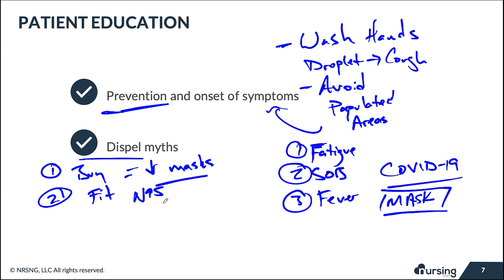Another reason to discourage patients from buying N95 masks is that they require fit testing to be effective. Someone with a beard, for example, will not get a proper seal. Additionally, people tend to reuse masks, which creates two problems: they constantly adjust the mask touching their face, and they may be reintroducing bacteria or virus particles to their face. Encourage handwashing and avoiding crowds instead.